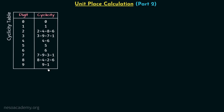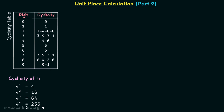When we focus on the cyclicity of digit four, for the increasing powers of four we are getting 4, 6, 4, 6, 4, 6, and so on as the unit digit. From this we can say that whenever the power of four is odd — like power equal to one or three — the digit at unit place is equal to four. Similarly, when we focus on the even powers, the unit digit is equal to six.